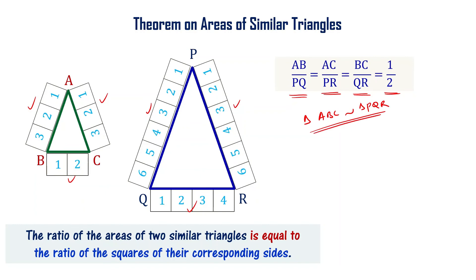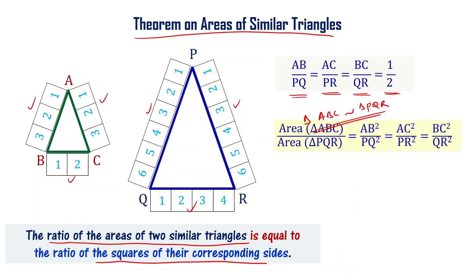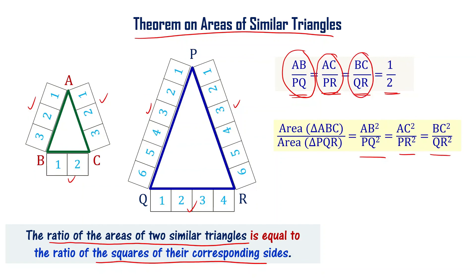Using the SSS criterion for similarity of triangles, area of triangle ABC divided by area of triangle PQR equals AB by PQ whole square, which equals AC by PR whole square, which equals BC by QR whole square. This is the theorem: the ratio of the areas of two similar triangles is equal to the ratio of the squares of their corresponding sides.